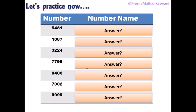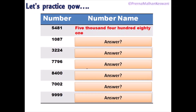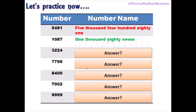Now, let's practice the number names. The first number given to you is 5,481. So 5 is in the 1000s place, 4 is in the 100s place, and then 81. So five thousand four hundred and eighty-one. That's right. Next number is 1,087. So 1 is in the 1000s place, 0 is in the 100s place — so we will not mention hundreds — and then 87. So one thousand and eighty-seven is the answer.